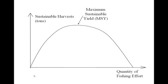The sustainable yield curve comes entirely from the biology of the fishery and the relationship between fishing effort and fishery growth. On this curve, fishing effort increases as we move right on the horizontal axis, and sustainable harvest is on the vertical axis. When we get to the very top, that's what we call the maximum sustainable yield — a very important point that tends to be the target most fisheries managers are trying to reach.